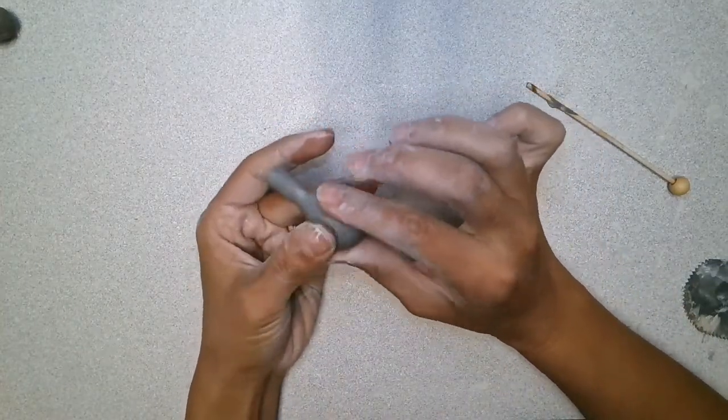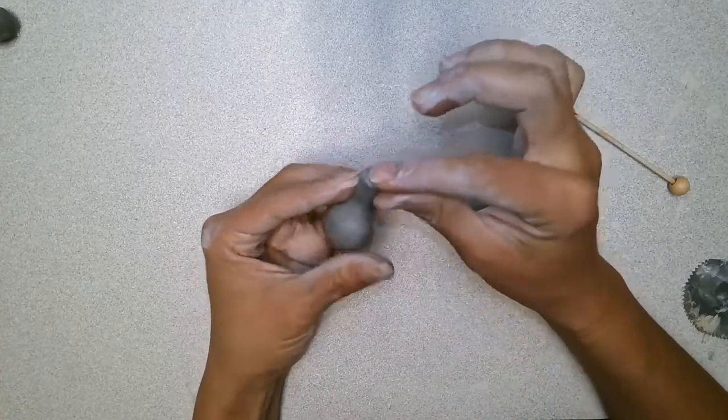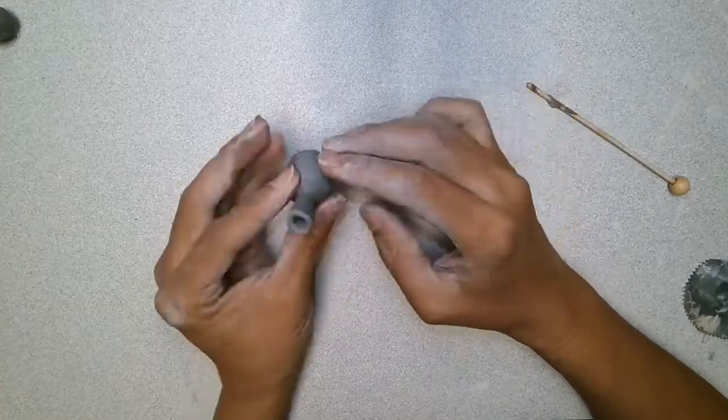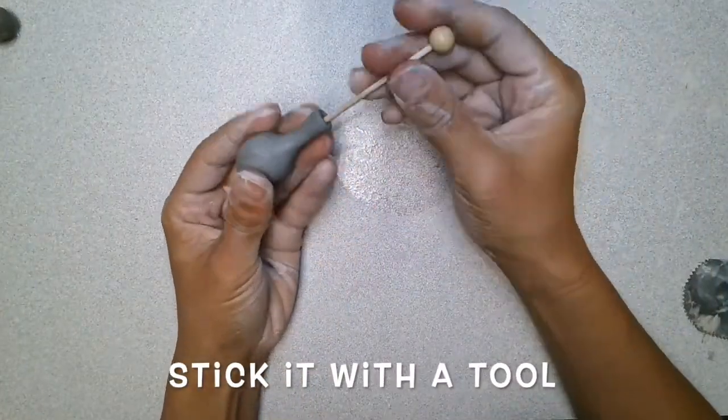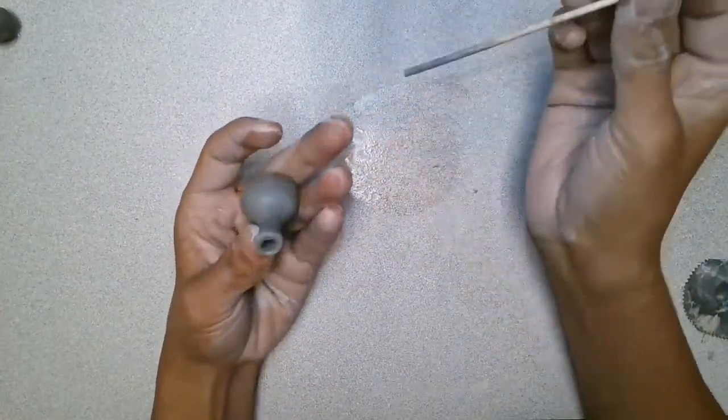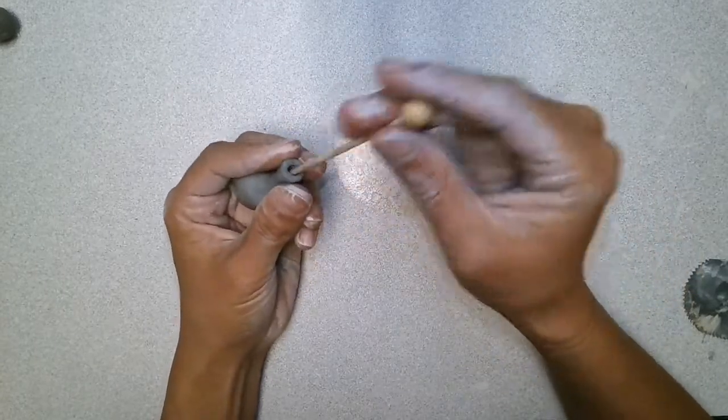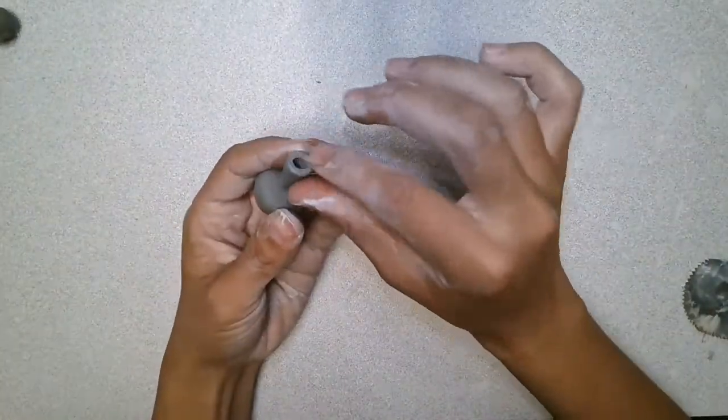Next I'm going to take my tool and I'm actually going to go all the way through it so that the neck and the body have a nice opening. If you glaze the inside, it'll be able to hold water and you can eventually put little flowers in there.